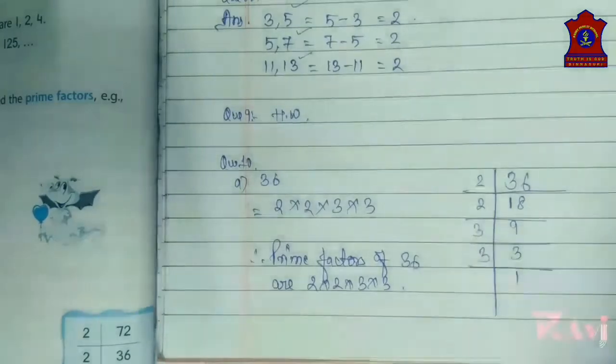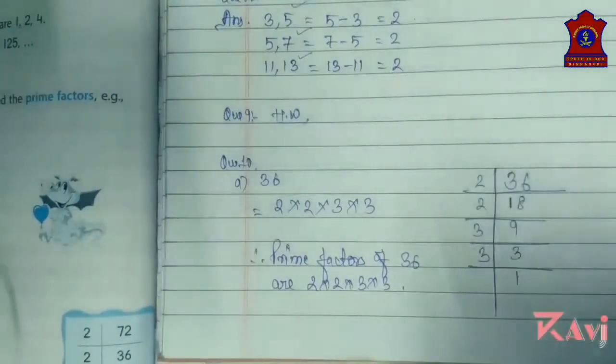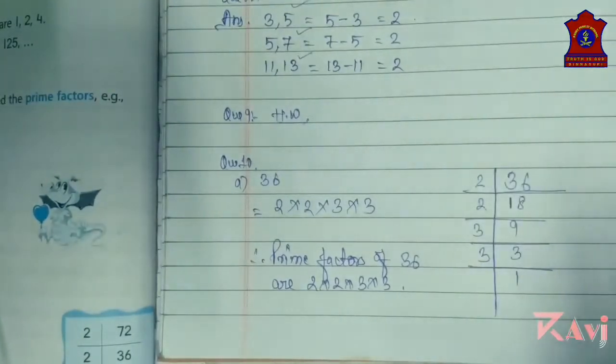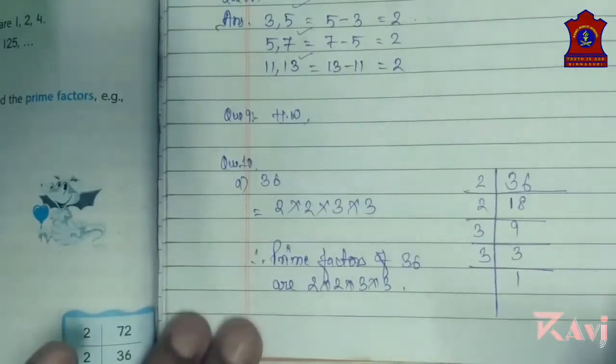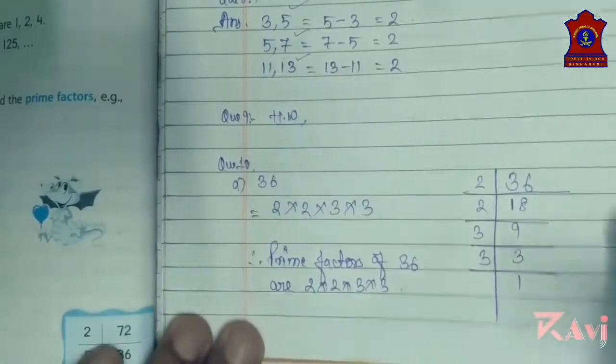There is one more method — you can make the factor tree of this number. But we will use that only if it is specifically asked.